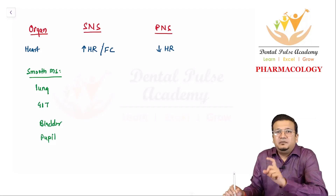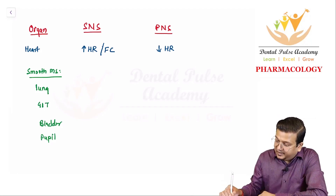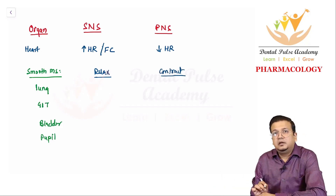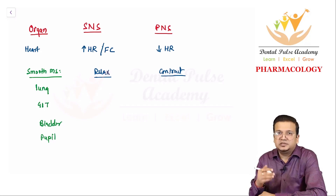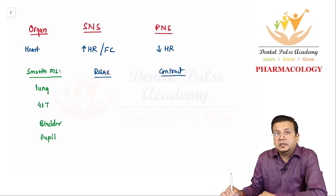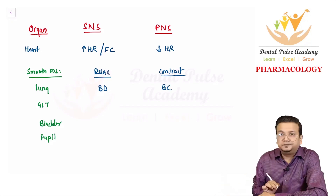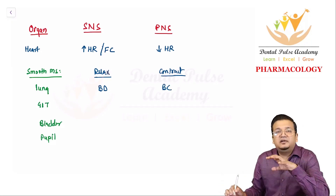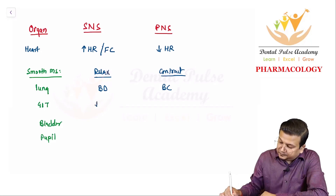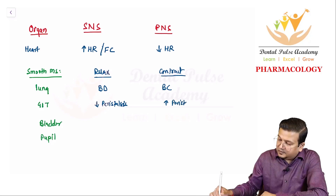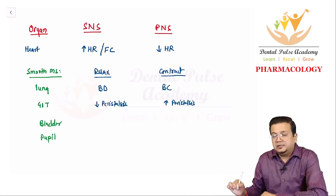In the lung, sympathetic inhibits smooth muscle causing relaxation, resulting in bronchodilation; parasympathetic stimulates, causing bronchoconstriction. In the GIT, sympathetic causes relaxation and decreased peristalsis; parasympathetic increases contraction and increases peristalsis.